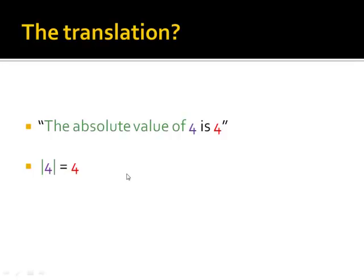Let's break that down. The translation. The absolute value of is the bars. Four is the number in the middle. Is means equals. And four is the number it's equal to.